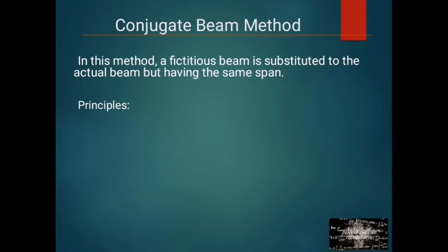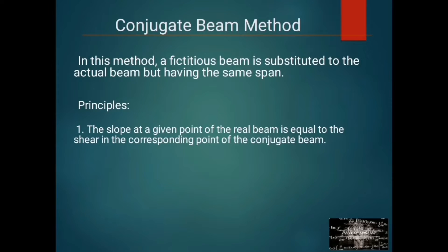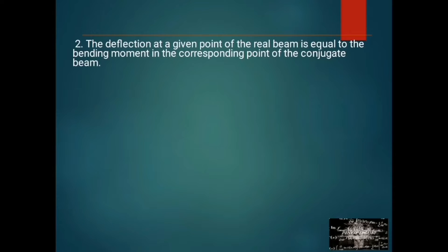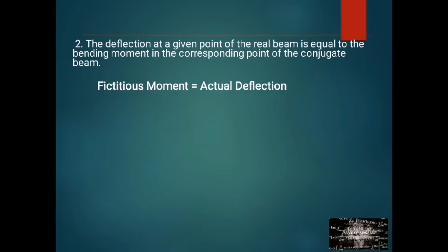We have the principles. Number 1: the slope at a given point of the real beam is equal to the shear in the corresponding point of the conjugate beam — fictitious shear is equal to the actual slope. Number 2: the deflection at a given point of the real beam is equal to the bending moment in the corresponding point of the conjugate beam — fictitious moment is equal to the actual deflection.